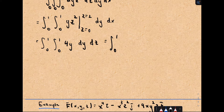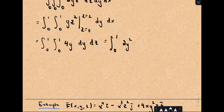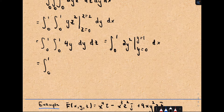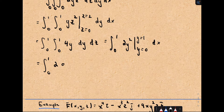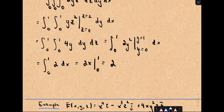Now integrating 4y with respect to y from 0 to 1 gives 2y², evaluated from 0 to 1. Plugging in y = 1 gives 2; the lower limit is 0. So we're left with 2. Integrating that with respect to x from 0 to 1 gives 2x, evaluated from 0 to 1, which is 2. So our answer for the first example is simply 2.